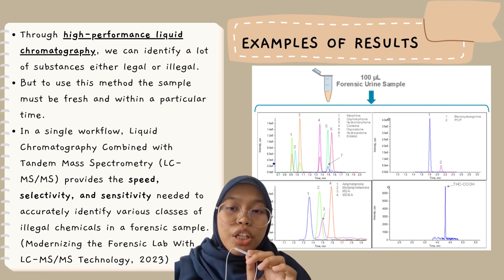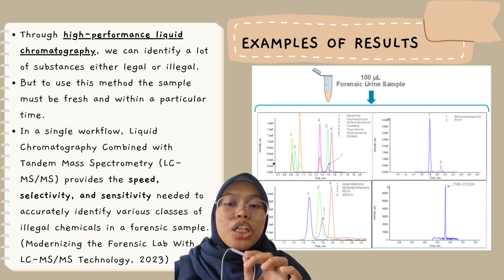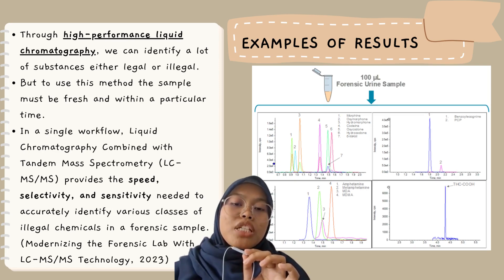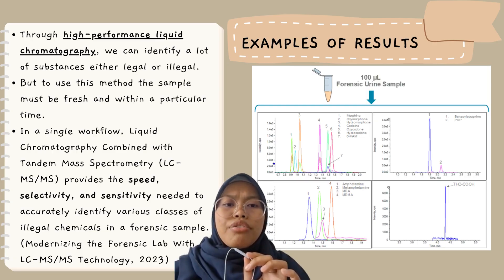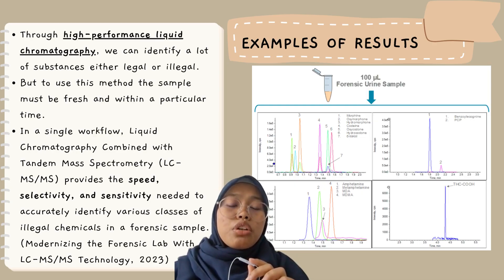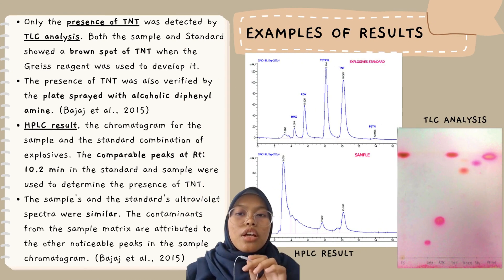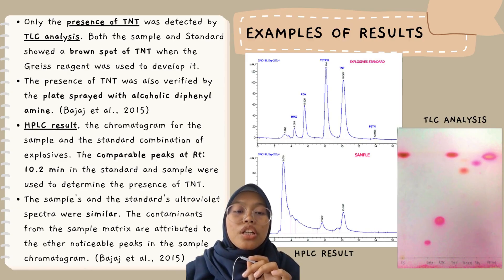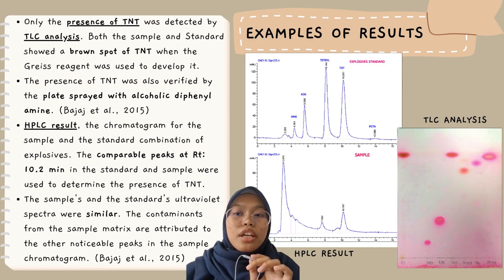Through high-performance liquid chromatography, we can identify many substances from a mixture, either legal or illegal, using fresh samples such as urine and blood. Urine sample results show many different substance contents and can detect illegal substances. For TLC, the stationary phase is silica on the TLC plate and the mobile phase is acetone. Both samples and standards show a brown spot of TNT, verified by spraying the plate with alcoholic diphenylamine. The HPLC result chromatogram from the sample and standard combination of explosive shows comparable peaks at a retention time of 10.2 minutes in both standard and sample, used to determine the presence of TNT. The sample and standard UV spectra are similar for TLC.